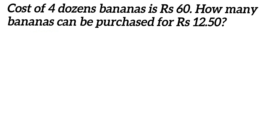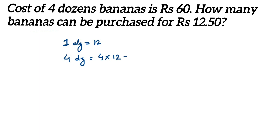To find that, we have to know what is the cost of one banana. So four dozens — how many bananas will be there? We know that one dozen is equal to 12, so there are 12 bananas in one dozen. If it is four dozens, it will be 4 into 12 which is equal to 48. So there are 48 bananas in four dozen.